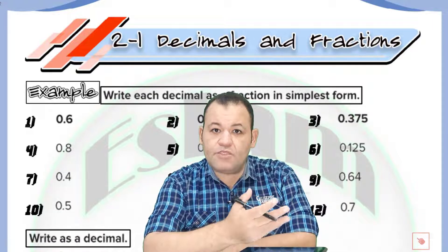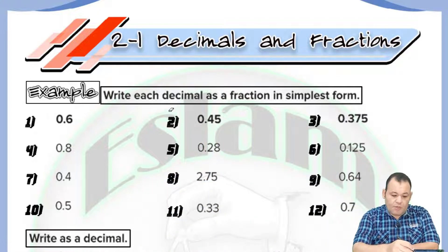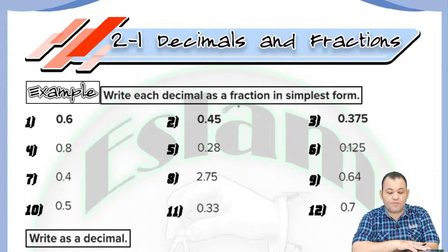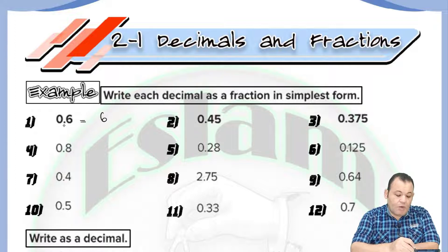We can convert between fractions and decimals with an easy way. For example, number one: we need to write each of the following decimals as a fraction in simplest form. How can we write 0.6 as a fraction? Just write the digit six as the numerator. Now look at the decimal point — we have only one digit to the right of the decimal, which means the denominator is equal to ten.